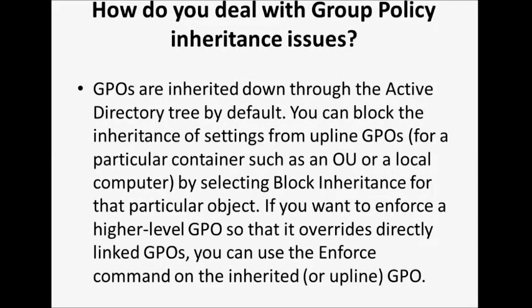How do you deal with Group Policy inheritance issues? GPOs are inherited down through the Active Directory tree by default. You can block the inheritance of settings from upline GPOs for a particular container such as an OU or a local computer by selecting block inheritance for that object. If you want to enforce a higher-level GPO so that it overrides directly linked GPOs, you can use the enforce command on the inherited or upline GPO.